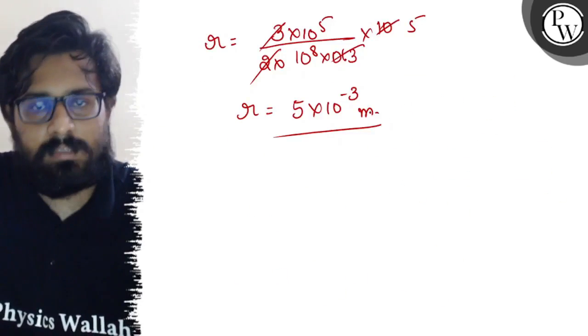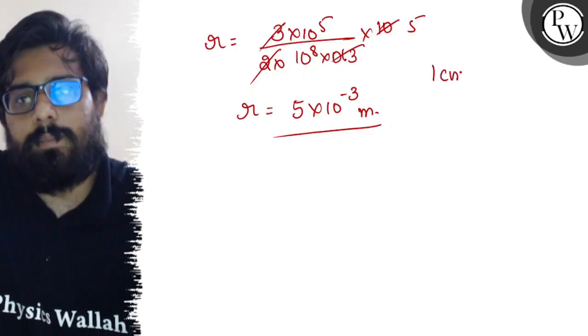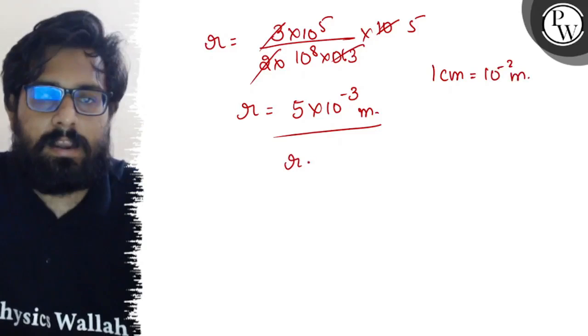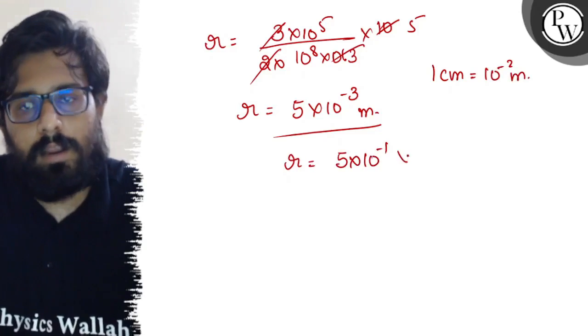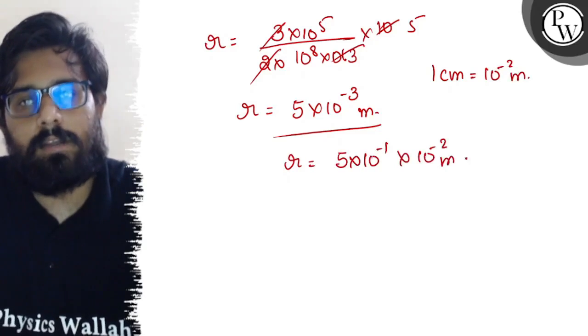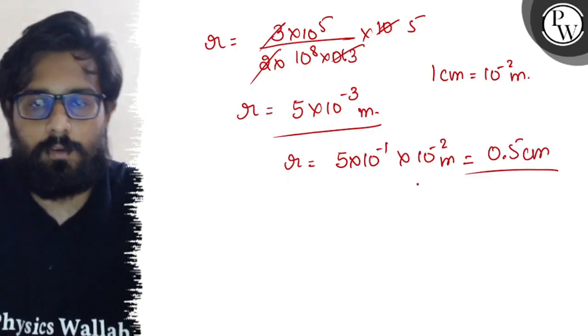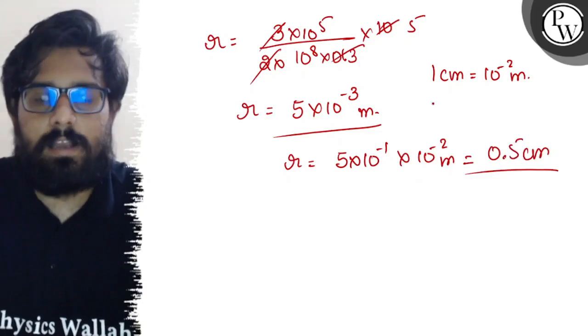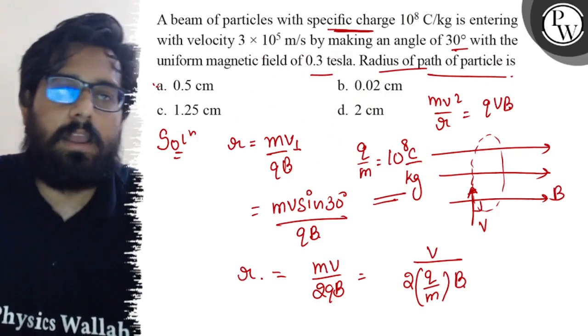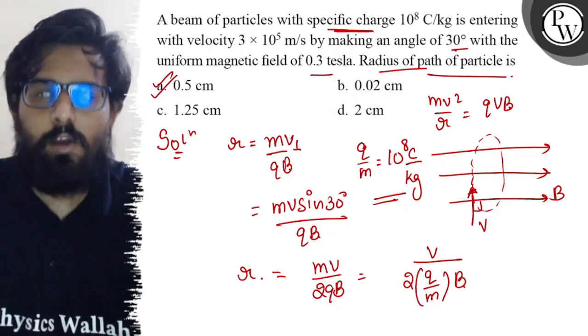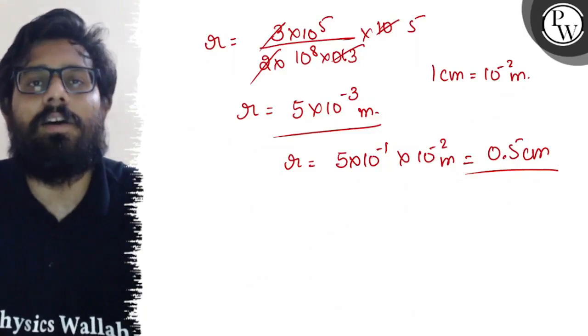So convert it into centimeters. We know that 1 centimeter equals 10^-2 meter, so r can be written as 5×10^-1×10^-2 meter, or you can say 0.5 centimeter. So this is our answer: r equals 0.5 centimeter, which you will find in option A. Your option number is absolutely correct: 0.5 centimeter. So I hope you got the concept of this question. All the very best.